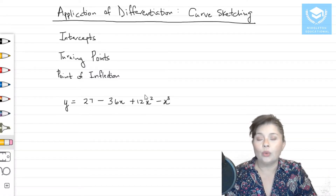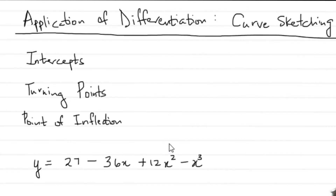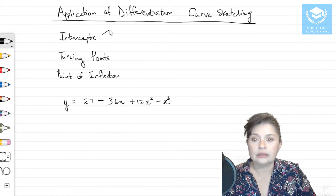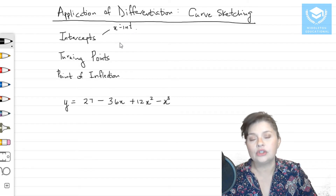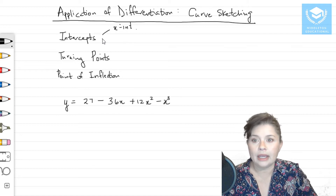When you are wanting to sketch any kind of curve, you need to have certain critical points, and those critical points are your intercepts, turning points, and points of inflection. Each of these have a characteristic of their own. For intercepts you get two of them — you get your x-intercepts, assuming that the variables you are using are x and y, and you get your y-intercept.